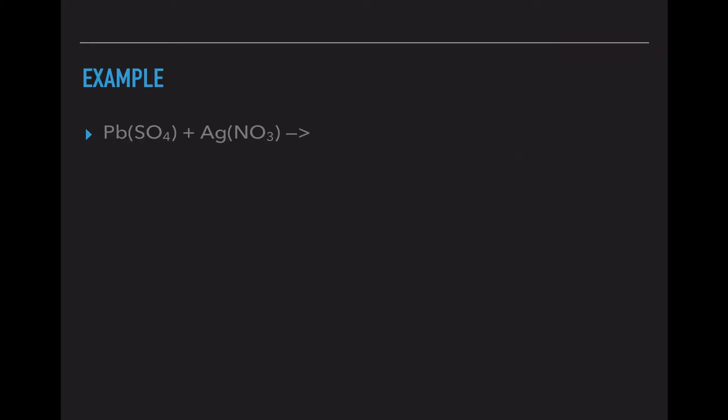Okay, one more example. I'm going to do all the steps right on this slide. So Pb(SO4) plus Ag(NO3). This is a double replacement reaction since there are two complete compounds. So right above the arrow, I'm going to put DR for double replacement. Second step, write them with their oxidation numbers.